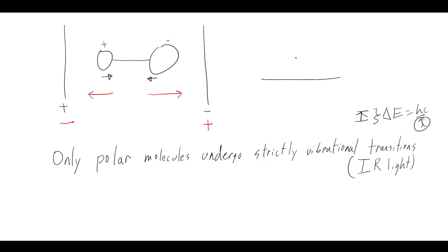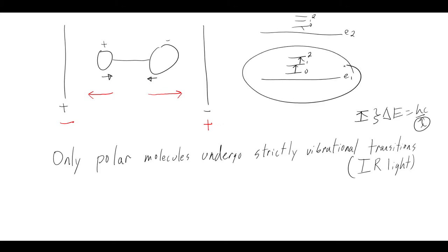The qualifier 'strictly vibrational' is important because, as discussed with Jablonski diagrams, there can be different electronic states E1, E2 with vibrational states among them. You could have an excited vibrational state of the ground electronic state promoted to a ground vibrational state of an excited electronic state - that's changing a vibration while also accompanying an electronic transition. To undergo strictly vibrational transitions within a given electronic state, the molecule must have a dipole.